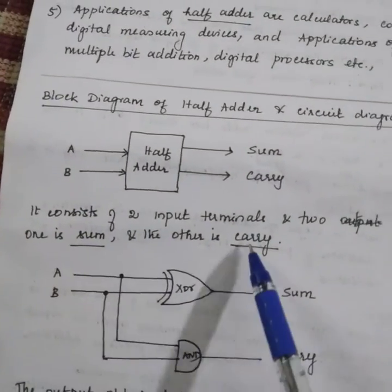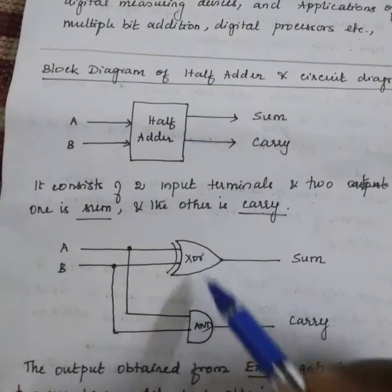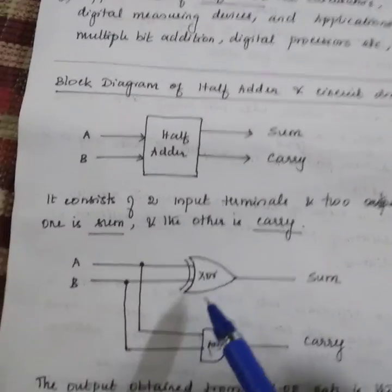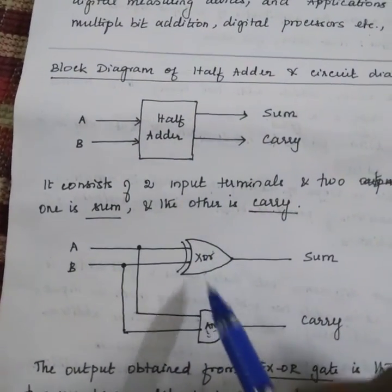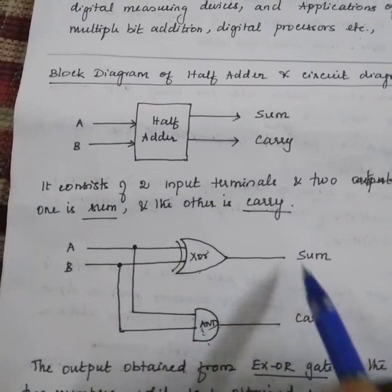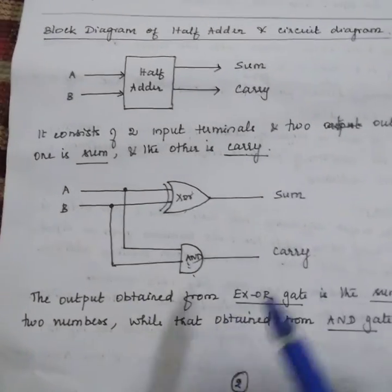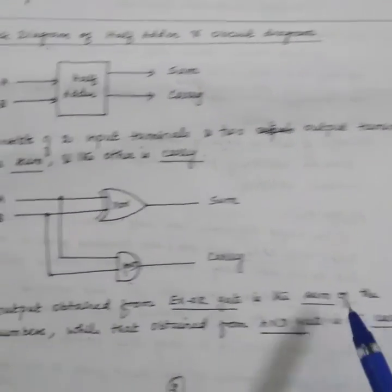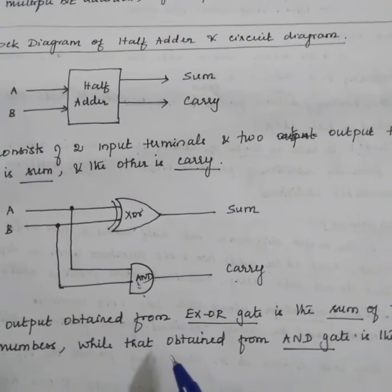One is sum and one is carry. Here we are using two gates: one XOR and one AND. So the circuit diagram will be simple. This is XOR and this is AND. Two inputs: one will be for sum and another one will be for carry. The output obtained from XOR gate is the sum of the two numbers, while that obtained from AND gate is the carry.